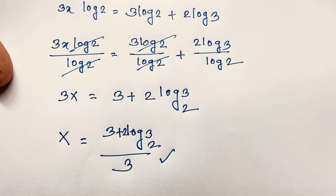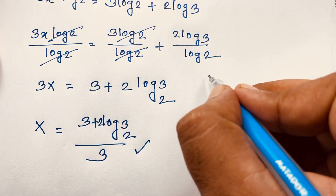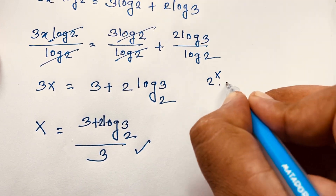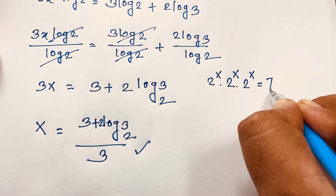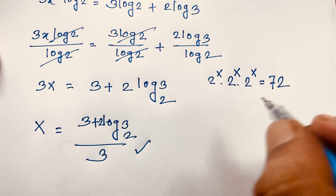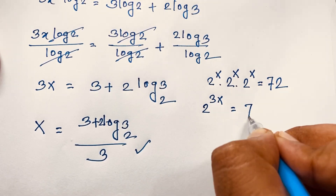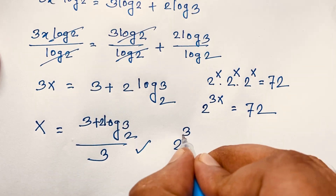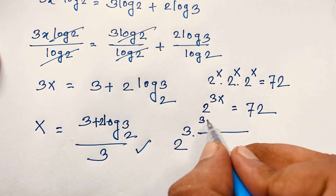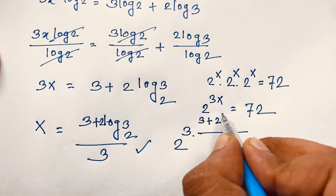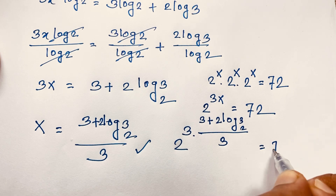Let's verify our answer. Our question is: 2 to the power x times 2 to the power x times 2 to the power x equals 72. This expression becomes 2 to the power 3x equals 72. Substituting x equals (3 + 2·log₂3) / 3, we get 2 to the power 3x equals 72.